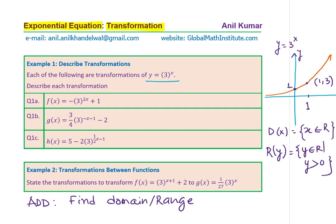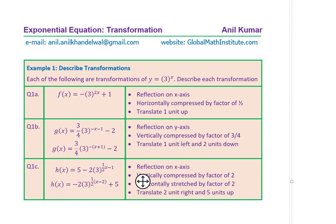Now let's begin and describe the transformations. For 1a, f(x) equals minus 3 to the power of 2x plus 1. That minus means the function will get reflected on the x-axis. The 2 in the exponent represents horizontal compression by a factor of half, and plus 1 means it is going to be translated 1 unit up.